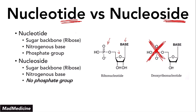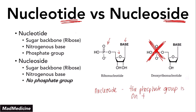The way I also remembered it: in a nucleoside, the phosphate group is on the side. Nucleoside — phosphate group on the side. I always memorized the nucleoside this way. If I remember that the phosphate group is always on the side for a nucleoside, then I can easily recall that a nucleotide contains a phosphate group. Pretty straightforward.